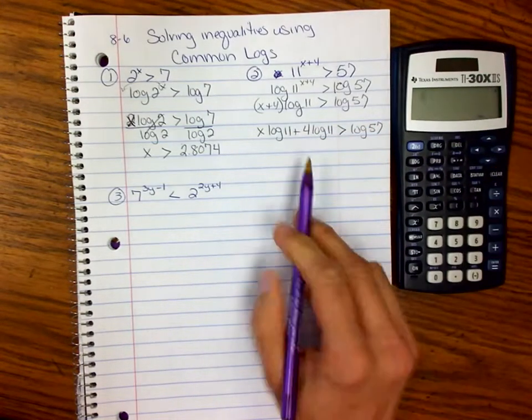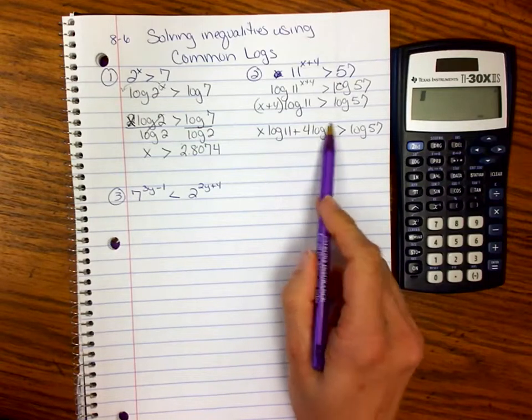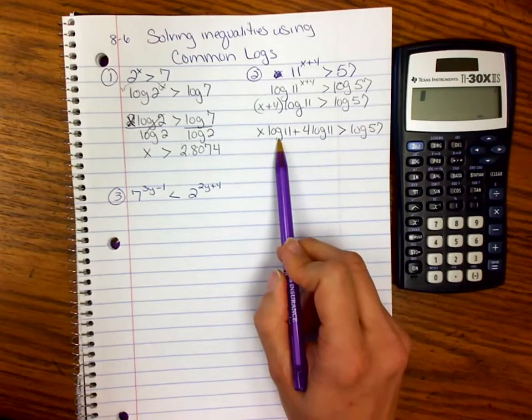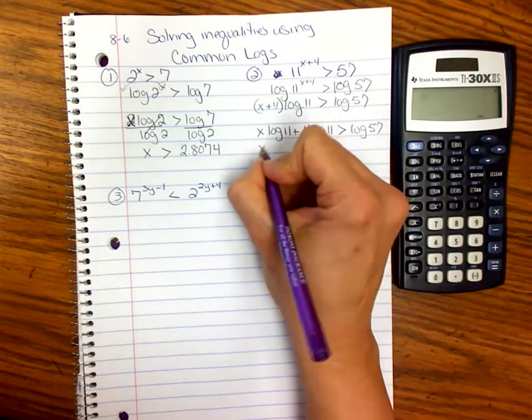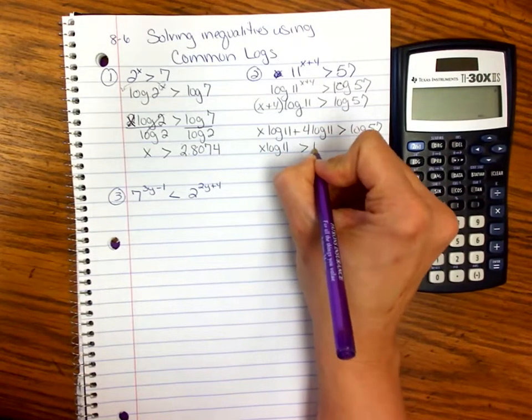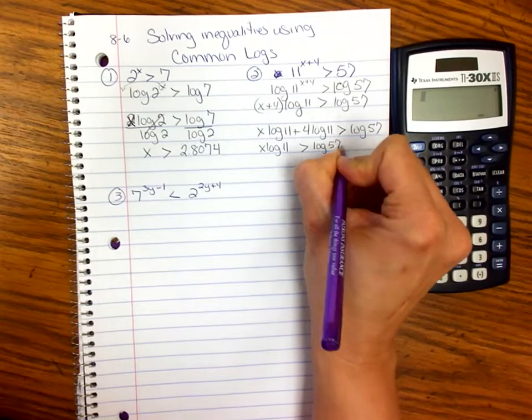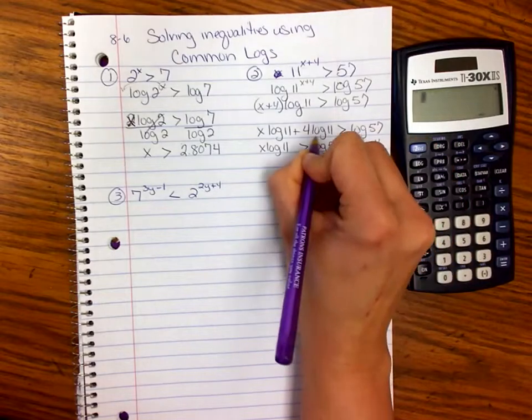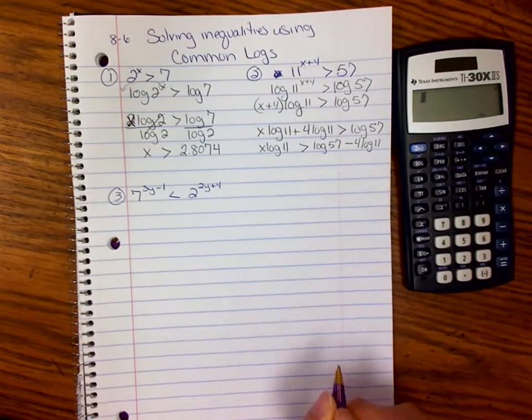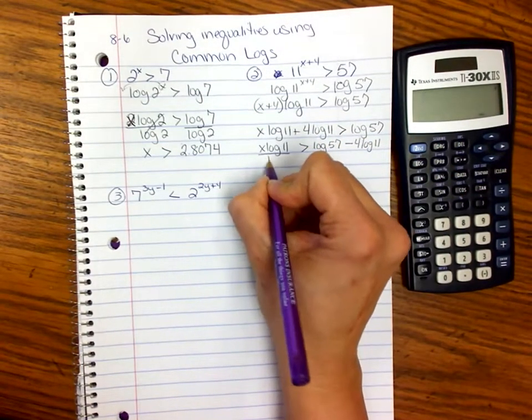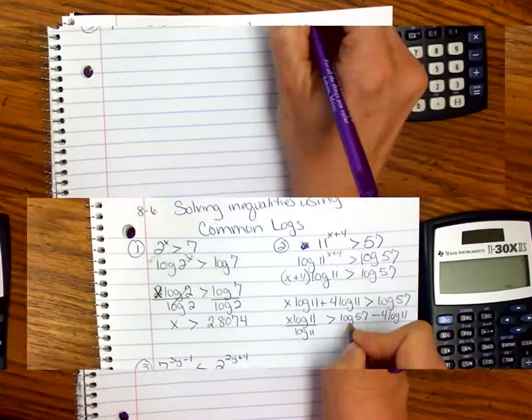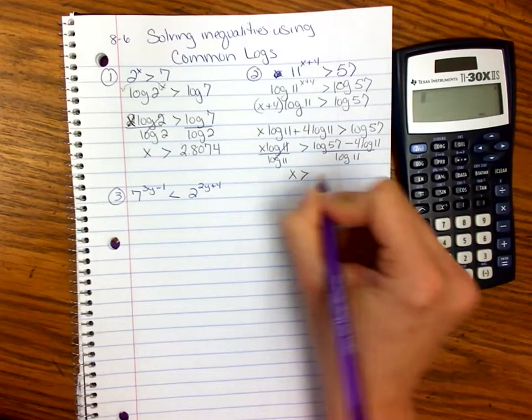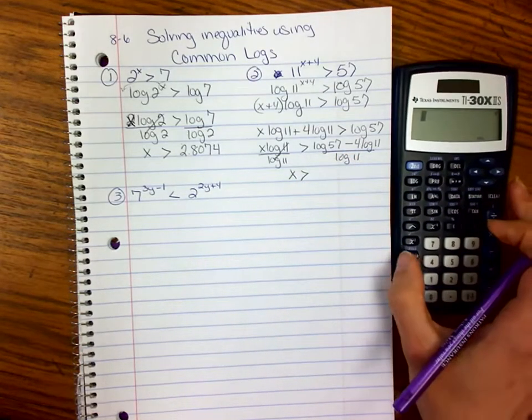Using the distributive property: (x+4)log(11) becomes x·log(11) + 4·log(11) > log(57). To get x alone, we subtract 4·log(11) from both sides, then divide by log(11). So x·log(11) > log(57) - 4·log(11), and dividing by log(11), we get x alone. So x is greater than all of that.